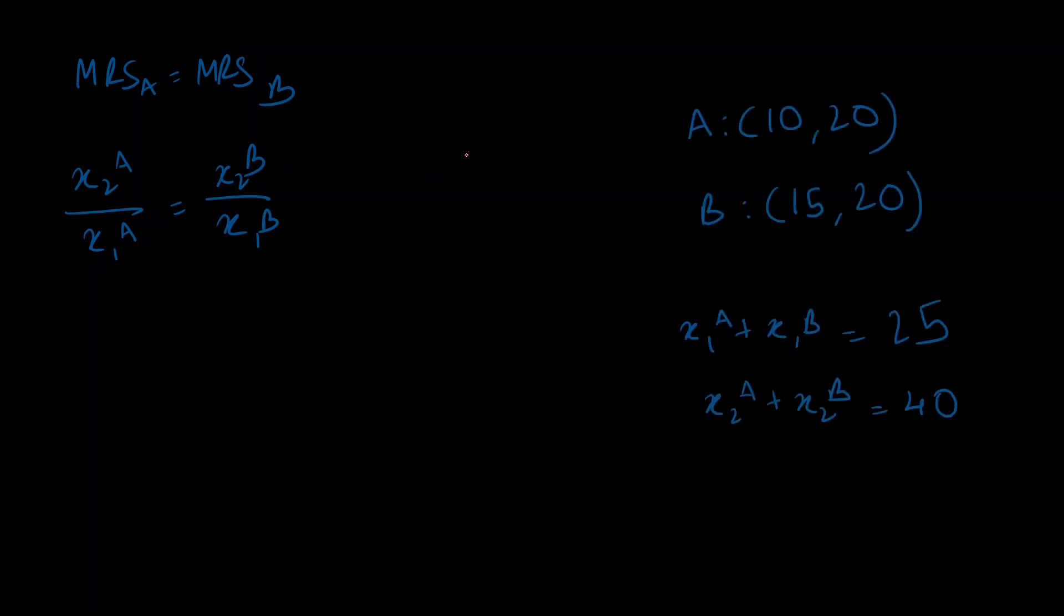One more step remaining. Here I have A's initial endowment and B's initial endowment. Now since we are talking about Pareto efficient points, we have to make sure that between the two of them, both agents are consuming every unit of good available in our world. So A initially had 10 units of good 1 and B initially had 15 units of good 1. So the total number of units of good 1 available in our world is just 10 plus 15, so that's 25. So x1a plus x1b should be equal to 25. Similarly, we can do it for good 2 as well. A initially had 20, B initially had 20, so that's 40. So x2a plus x2b should be equal to 40.